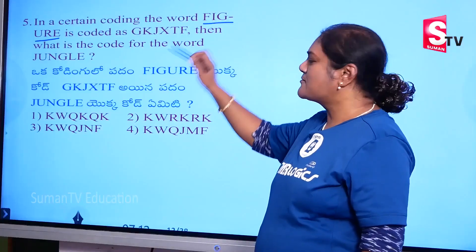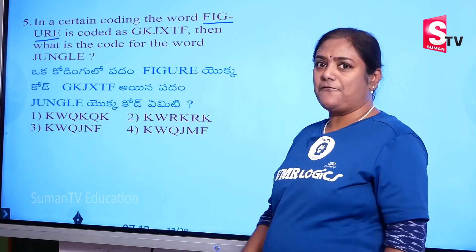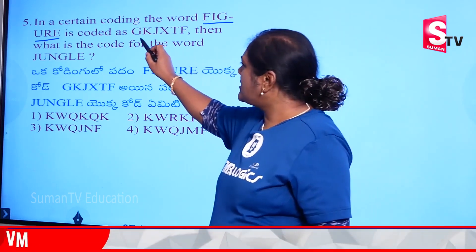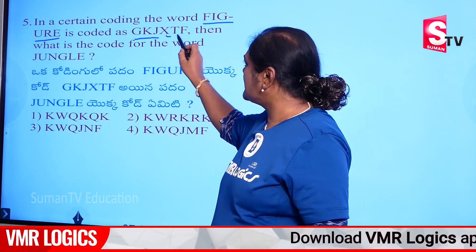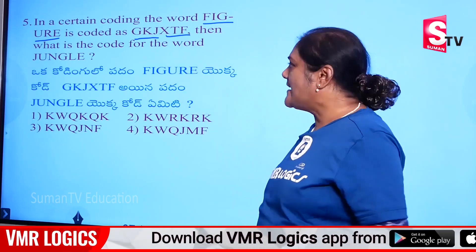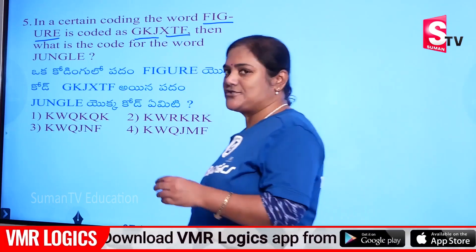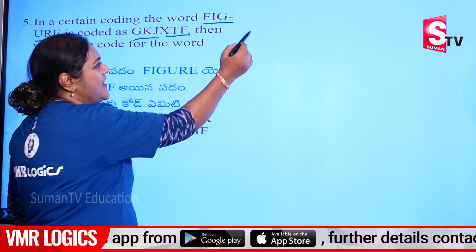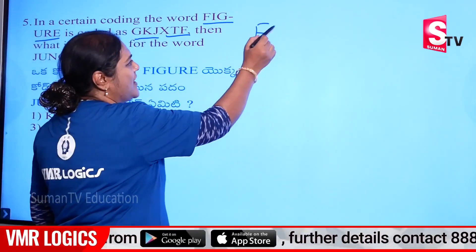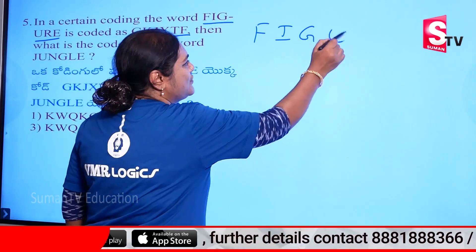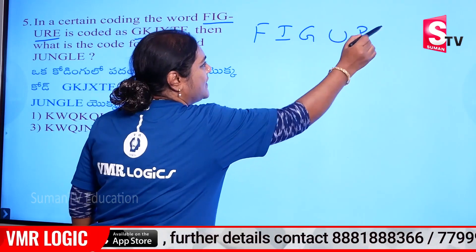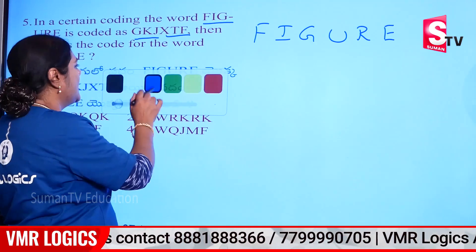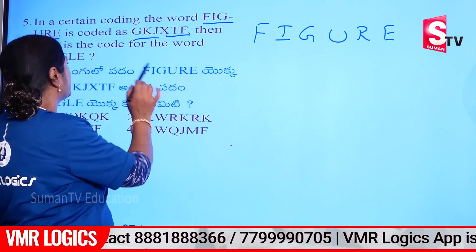Now, next model — figure. Code: G, K, J, X, T, F. Okay, now let's look at this question and this code once. Alright: F, I, G, U, R, E. That is 'FIGURE' — 20 letters. Okay, the code gives these letters.